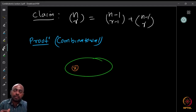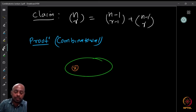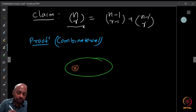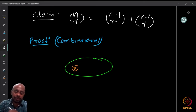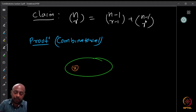If you can find your own argument for this, you should do that first. Stop, think for some time, and try to find a combinatorial proof explaining why n choose r — which counts the r element subsets of an n element set — must equal the r minus 1 element subsets of an n minus 1 element set plus the r element subsets of an n minus 1 element set.